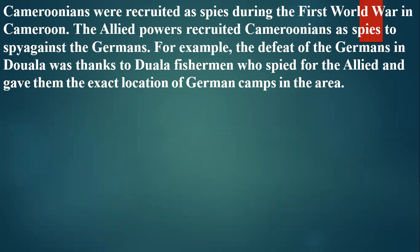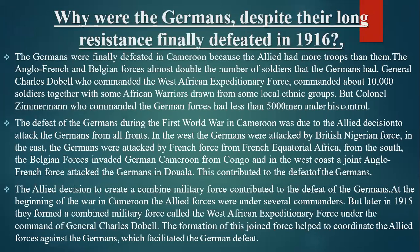Moving to the second part: why were the Germans defeated despite their long resistance? First, the Germans were finally defeated in Cameroon because the Allied powers had more troops. The Anglo-French and Belgian forces almost doubled the number of soldiers the Germans had. For example, General Charles Dobell, who commanded the West African Expeditionary Force, commanded about 10,000 soldiers together with African warriors drawn from local ethnic groups, while Colonel Zimmermann who commanded the German forces had less than 5,000 men under his control.